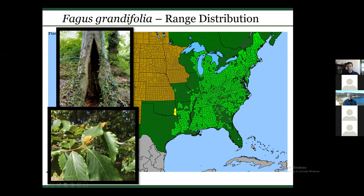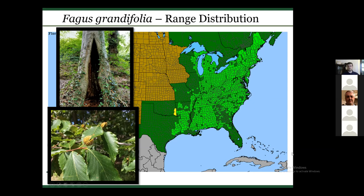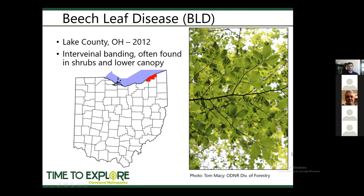American beech is a widespread tree species found in forests all across the eastern U.S. It's found throughout Ohio and is a hugely important ecological species. You can see hollowed-out beech trees that are still alive, providing valuable wildlife habitat. The beech nuts produced are extremely valuable — wildlife tend to eat them up before they even fall off. It's a really, really important tree species, which is why the introduction of beech leaf disease is so unfortunate.